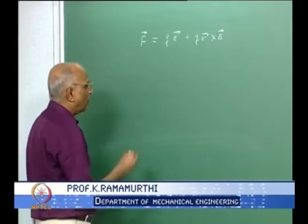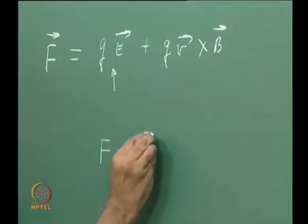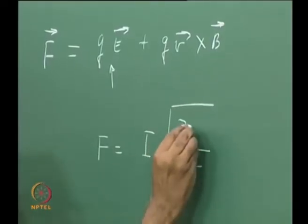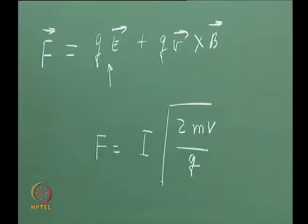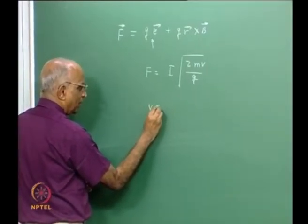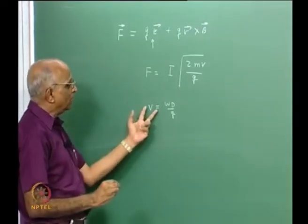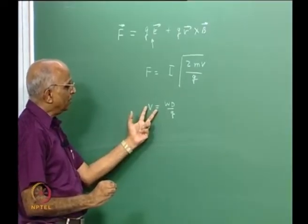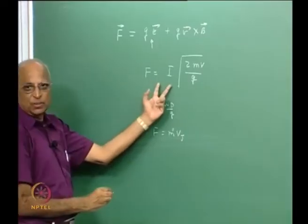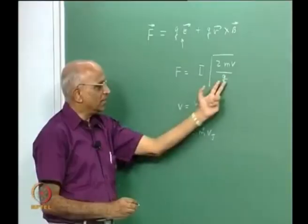We continued with this and found that the force in the case of the electrical field could be written as the current into something like 2 into something divided by Q into the mass into the voltage. We got this from the relation that potential difference voltage equals work done per unit charge, and therefore we were able to write Qv. From this relation and also from force equals m·dv/dt, we got this particular relation. Force is in Newtons, I is in amperes, voltage, mass, and charge are the quantities involved.